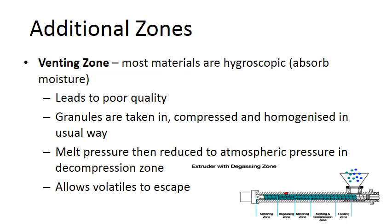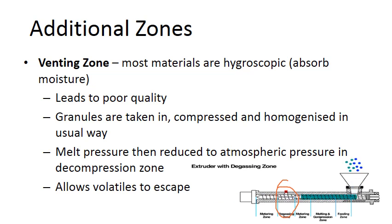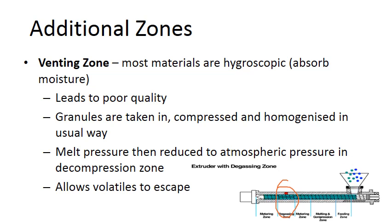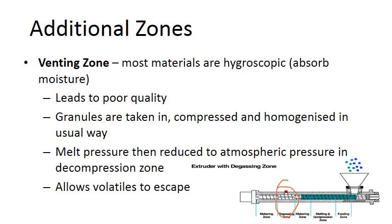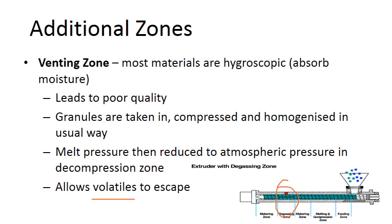The venting or degassing zone addresses the fact that most materials are hygroscopic — they absorb moisture, which can lead to poor quality. The granules are taken in, compressed, and homogenized in the usual way; the melt pressure is then reduced to atmospheric pressure in the decompression zone, allowing any volatiles to escape.